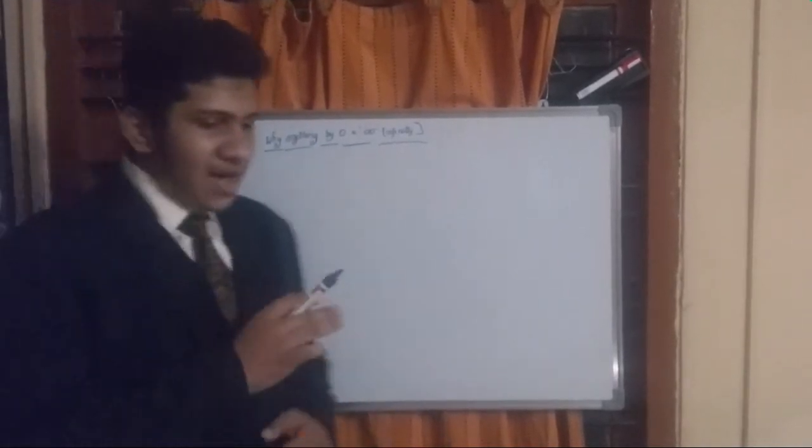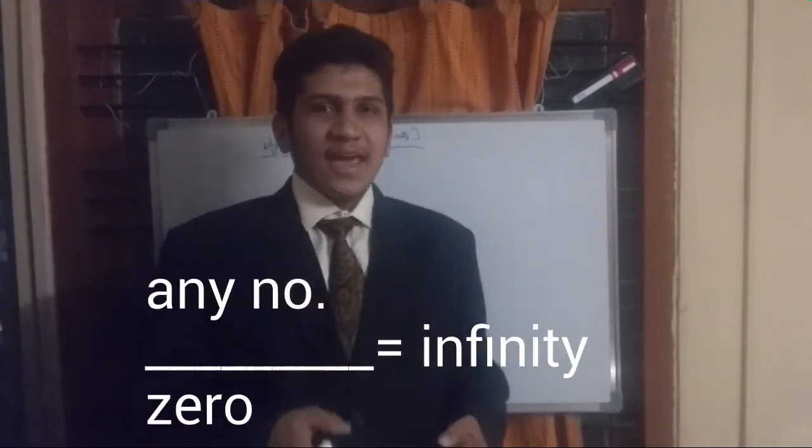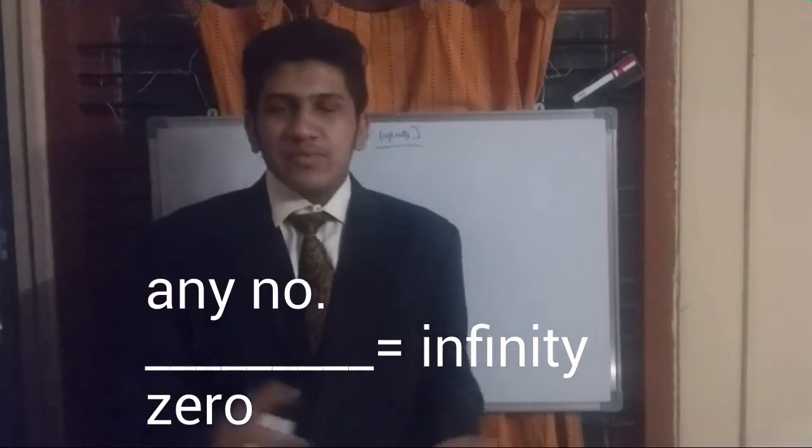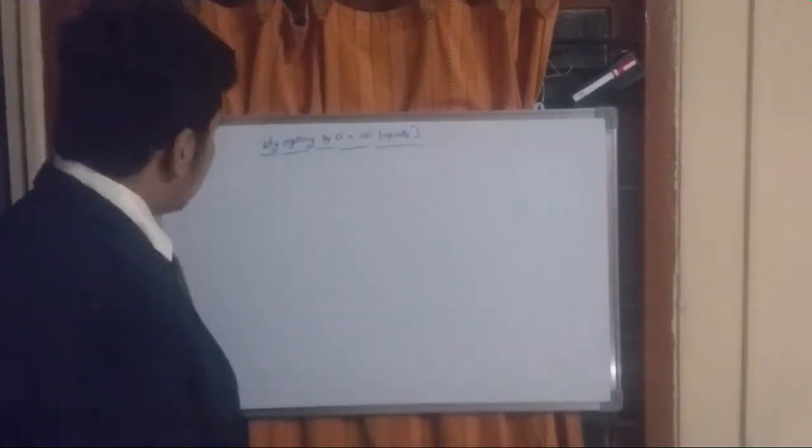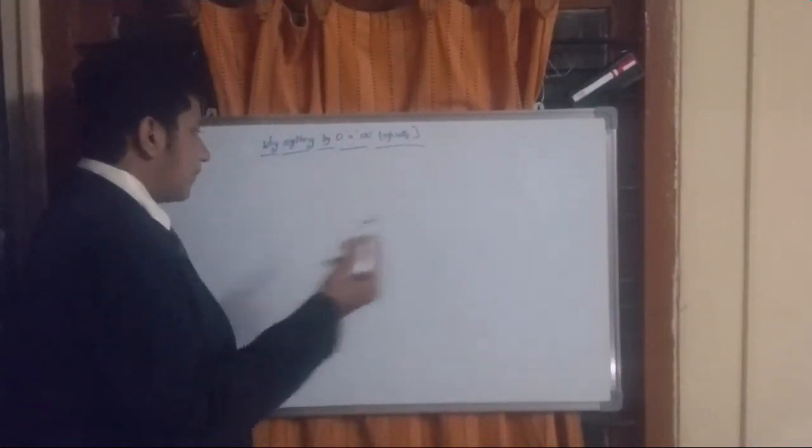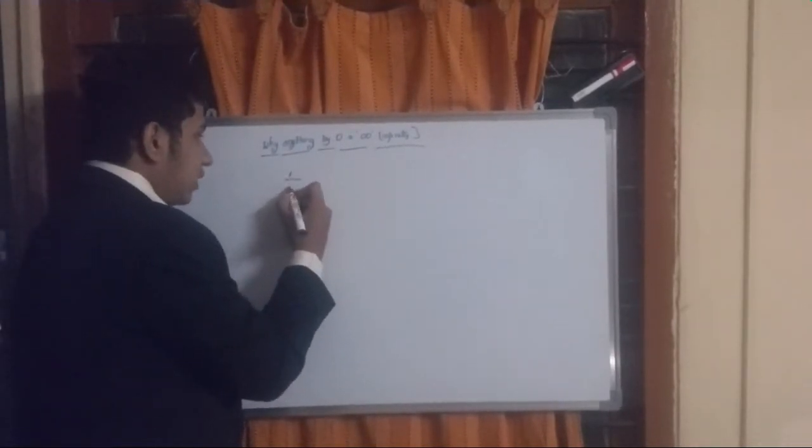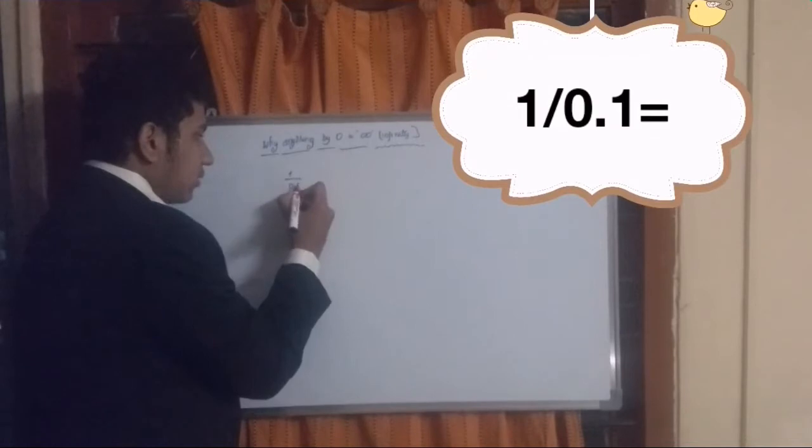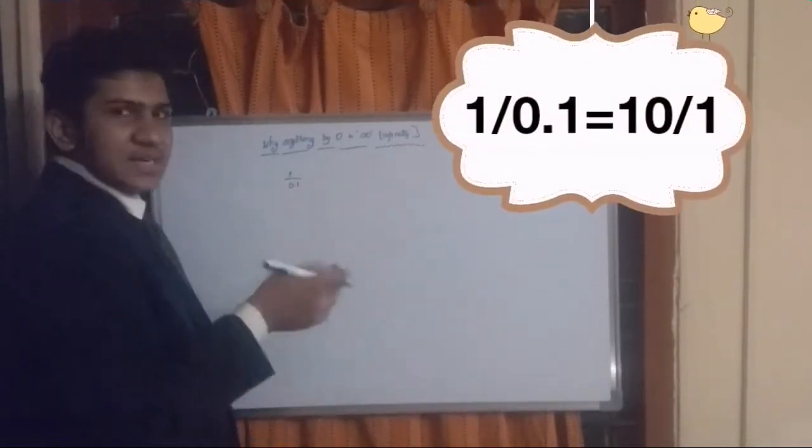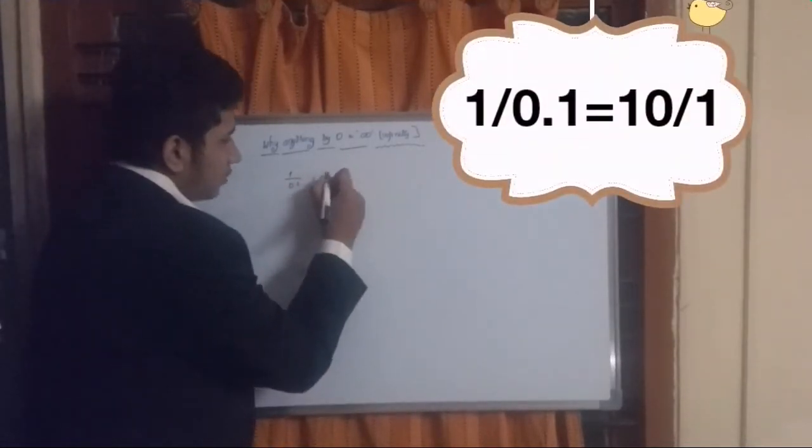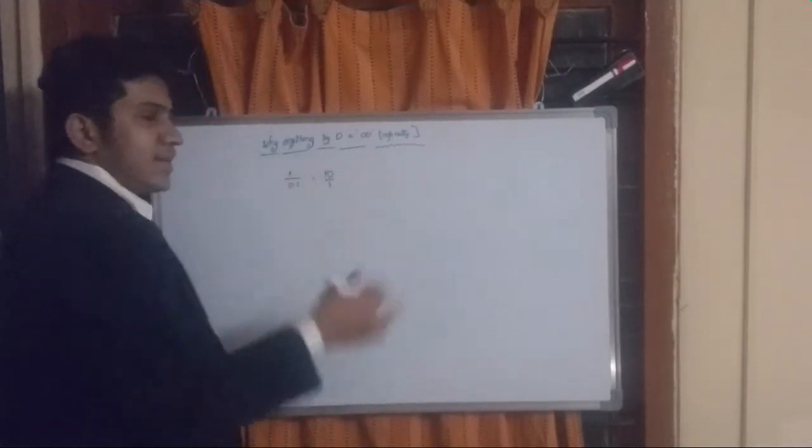Hello friends, so now I'm going to discuss why anything divided by zero equals infinity. Let's take an example: 1 divided by 0.1, that's nothing but 10 divided by 1, applying our decimal rules, which equals 10. Very simple answer.